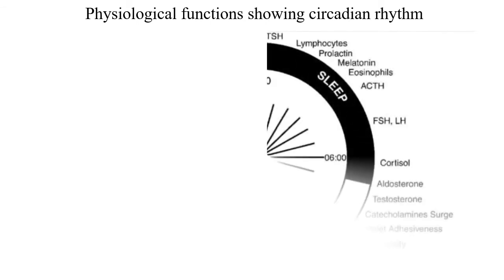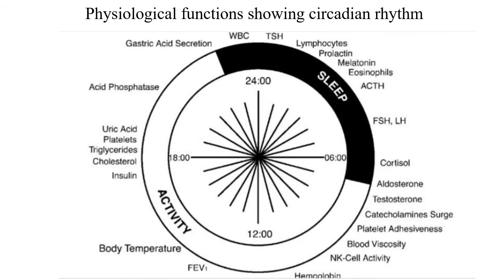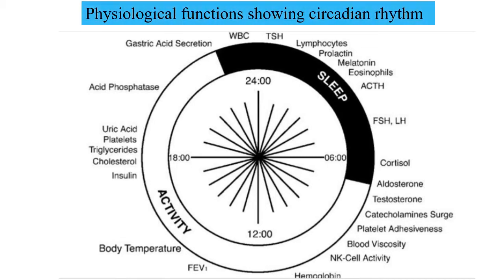Secretion of hormones follows circadian rhythm. Most hormones are secreted during sleep — examples include ACTH, follicle-stimulating hormone, cortisol, and aldosterone. Some hormones may be secreted during the daytime, such as insulin.